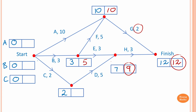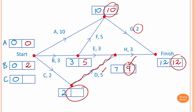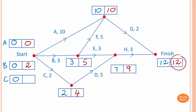Coming back to where it starts: from 10 we go back — 10 minus 10 is 0 for activity A. For activity B: from 5 we go minus 3, which is 2. To come back to activity C, we go from 9 minus 5, which is 4. Then going back further: 4 minus 2 is 2.